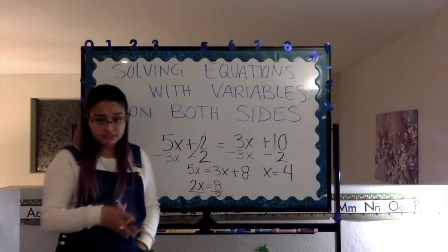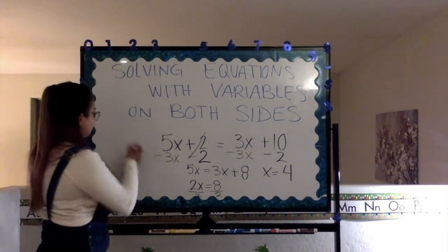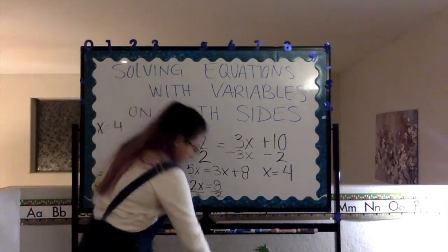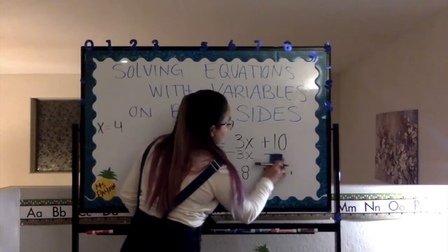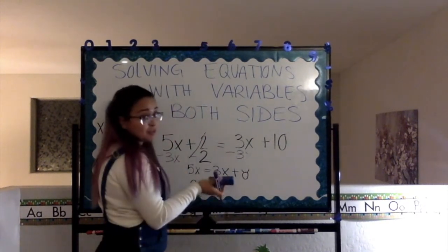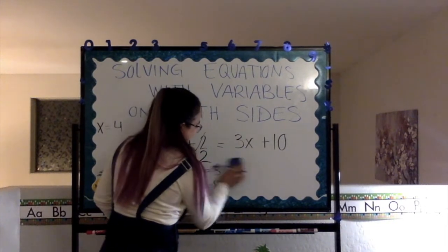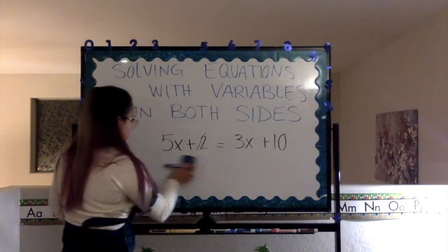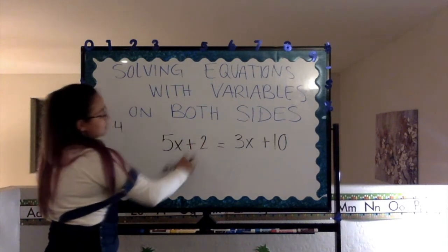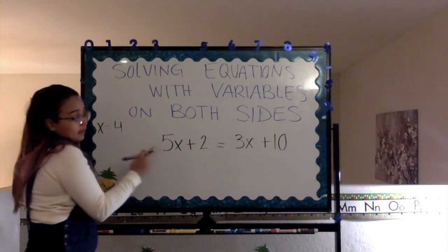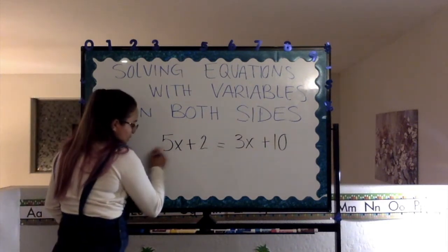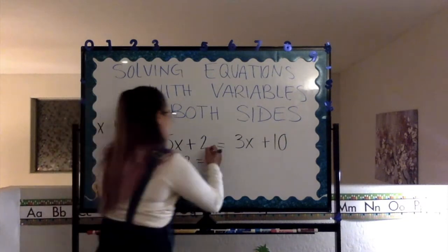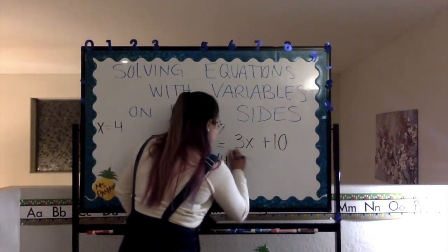Now, now that we have done that, remember, x equals 4. Let's write it on this side. And, let's make some room to check our answer. You do remember to check your answer, right? So, let's just erase this. Very well. Now, what we are going to be doing is plugging in the number 4 for our variable x. So, 5 times 4 plus 2 equals 3 times 4 plus 10.